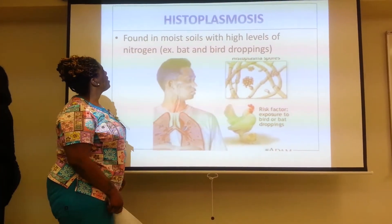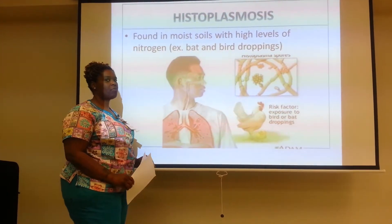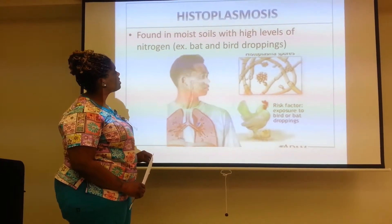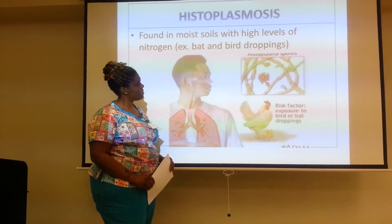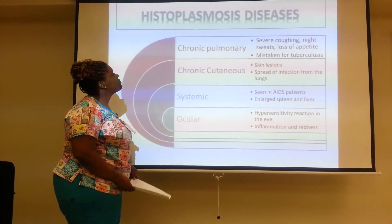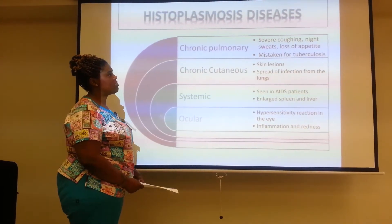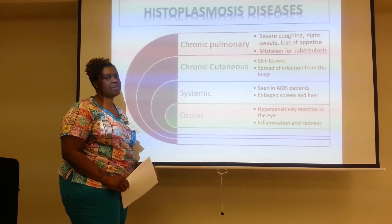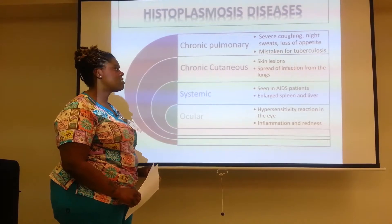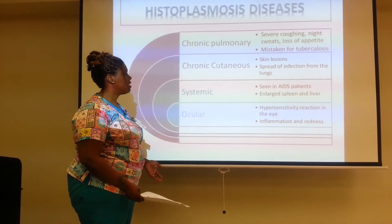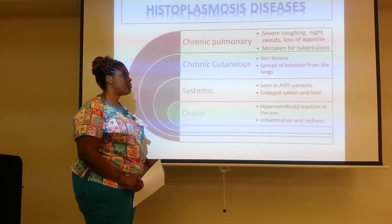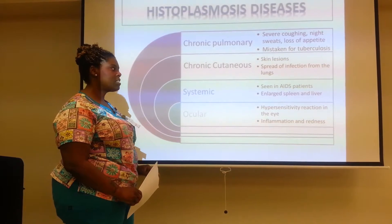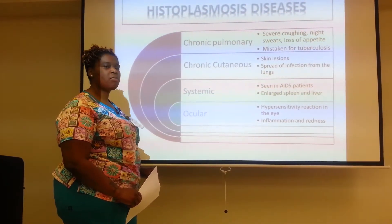Histoplasmosis is found in moist soil with high levels of nitrogen — for example, bat and bird droppings. Chronic pulmonary histoplasmosis presents with severe coughing, night sweats, loss of appetite, and can be mistaken for tuberculosis. Chronic cutaneous histoplasmosis involves skin lesions and spread of infection from the lungs. Systemic histoplasmosis is seen in AIDS patients and people with enlarged spleen and liver. Ocular histoplasmosis is a hypersensitivity reaction in the eye, presenting with inflammation and redness.